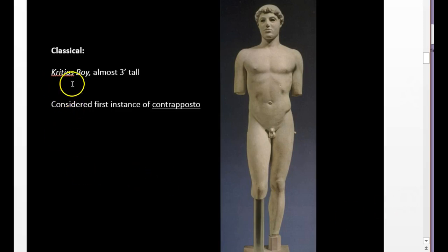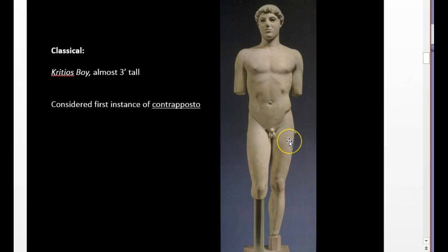Here's our first example — he's called the Critios Boy. That is a specific name; he is a Kouros statue, a little smaller than most. He's the first that we've found to use this new stance: the Contrapposto. If you don't know what this term means, please know it now. Essentially, it means counter-positioning one part of the body against the other. So you'll have a straight leg and a bent knee, one shoulder moving out towards you, one moving back.